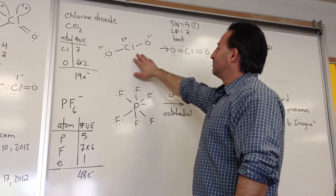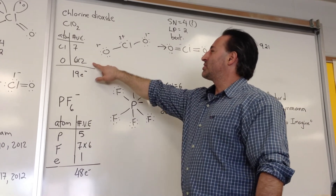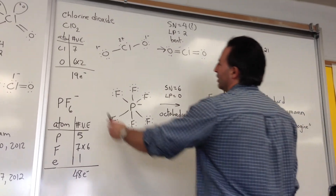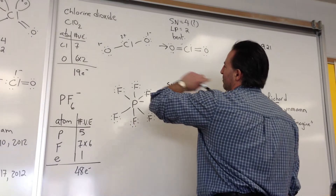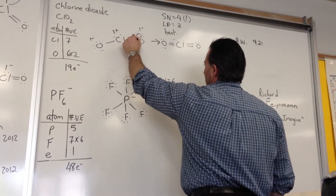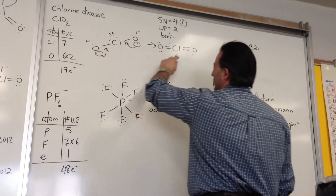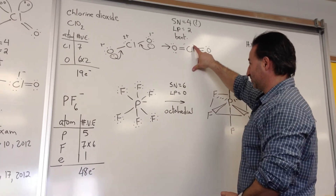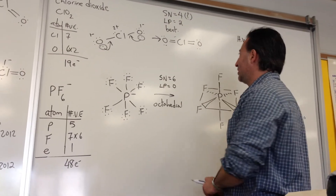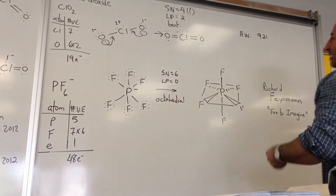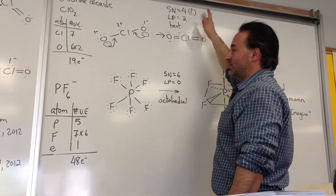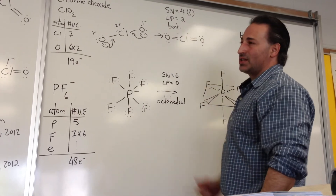Chlorine has 7 electrons, oxygen has 6, and there are two oxygen atoms, so there are 19 electrons total in this molecule. When you draw the initial structure you end up with formal charges everywhere. Then you move in electrons from the oxygen atoms to reduce those formal charges, and you get the final structure — notice the unpaired electron. With just one unpaired electron it would give a bent structure. The unpaired electron here acts like a second lone pair, so the steric number is still 4 with two lone pairs, suggesting a bent geometry.